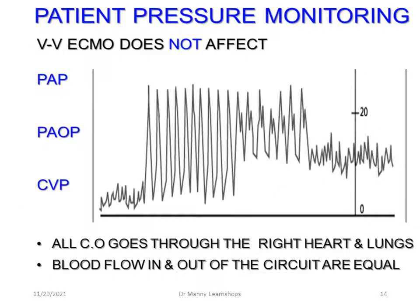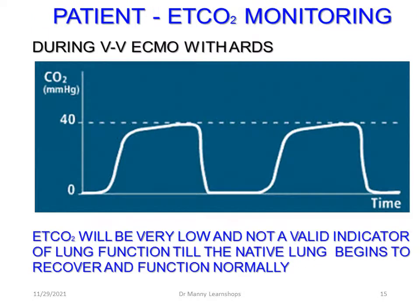VV ECMO does not affect pulmonary artery pressure, pulmonary artery occlusive pressure (wedge), or central venous pressure monitoring, because all cardiac output passes through the right heart and lungs and blood flow in and out of the circuit are equal. During ECMO with ARDS, capnography readings will be very low and are not a valid indicator of lung function until the native lung begins to recover and function normally.